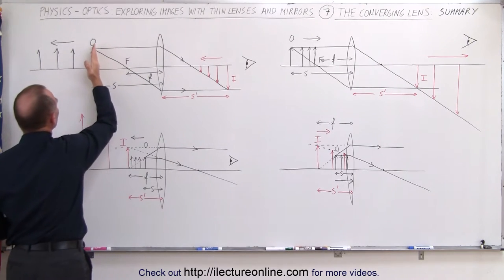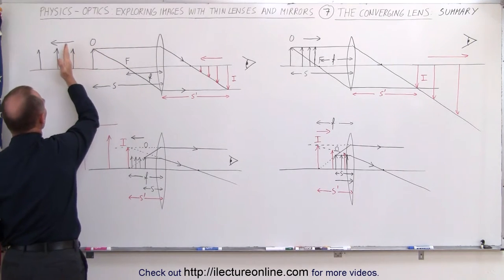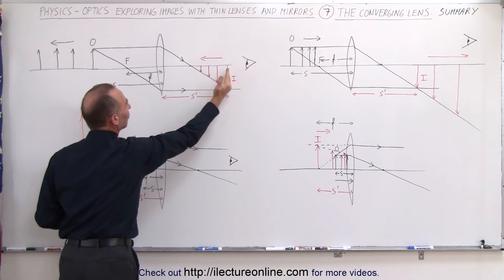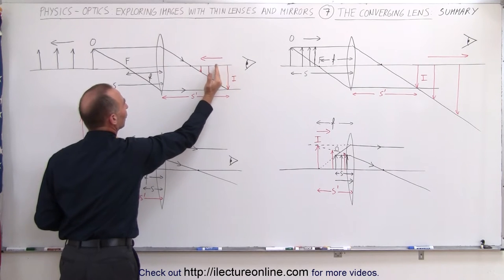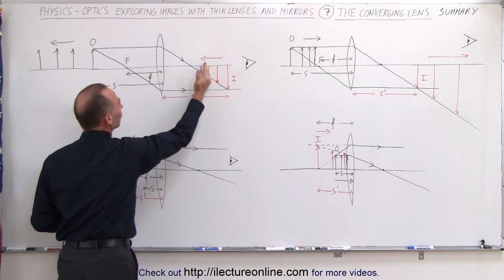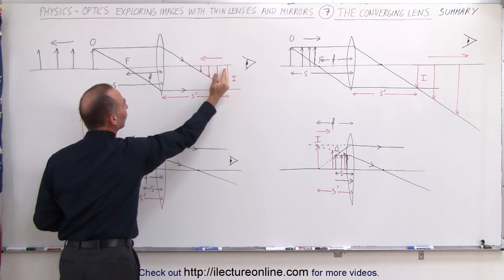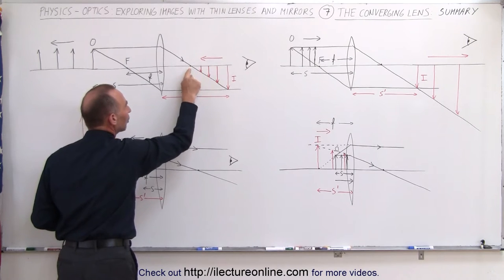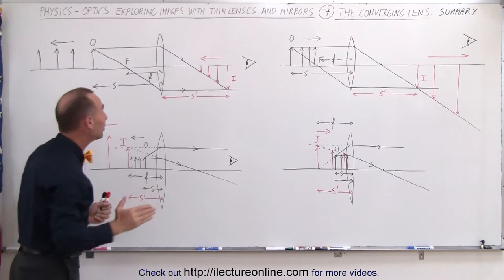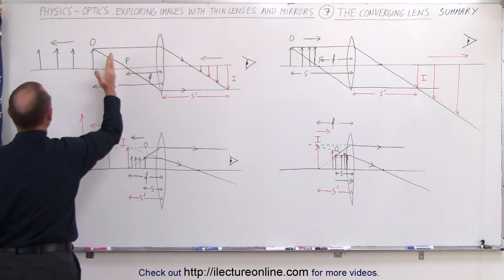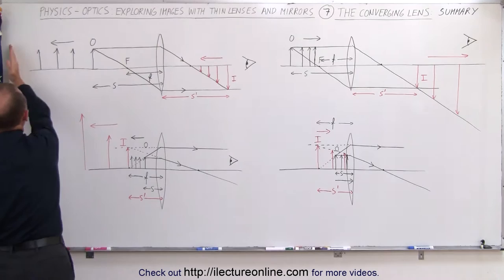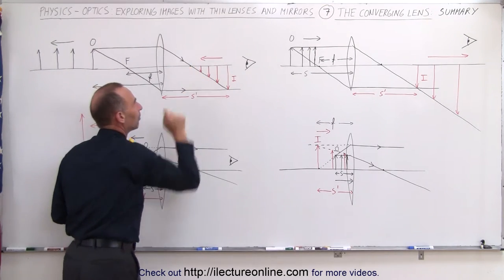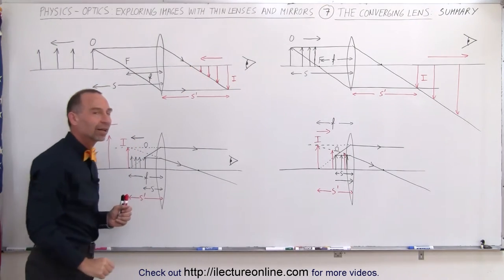As we moved the object farther and farther away from the lens, the image started forming closer and closer to the lens, and eventually closer and closer to the focal point on the other side. In the limit, as the object goes to infinity, the image will form at the focal point on the other side of the lens.